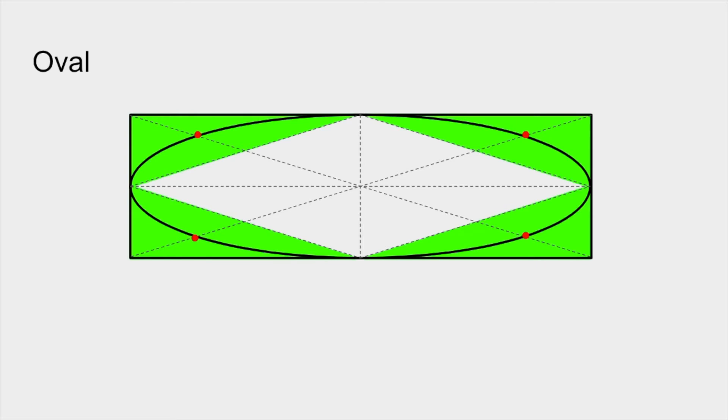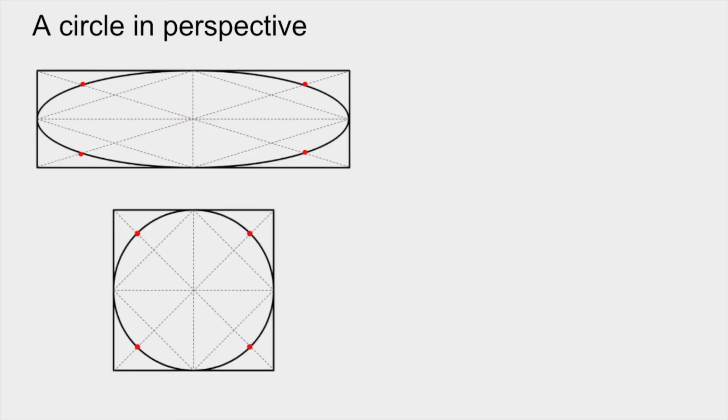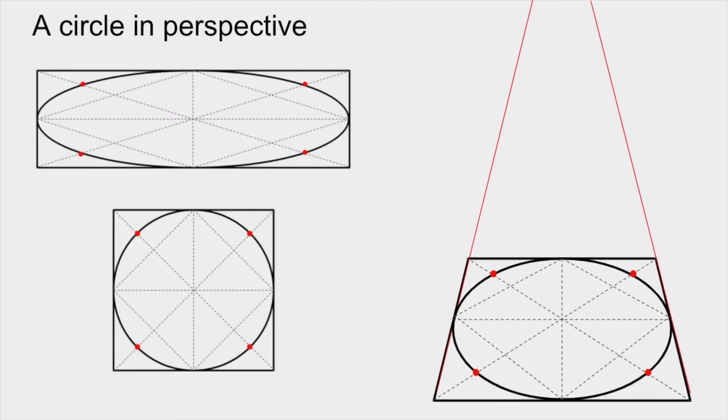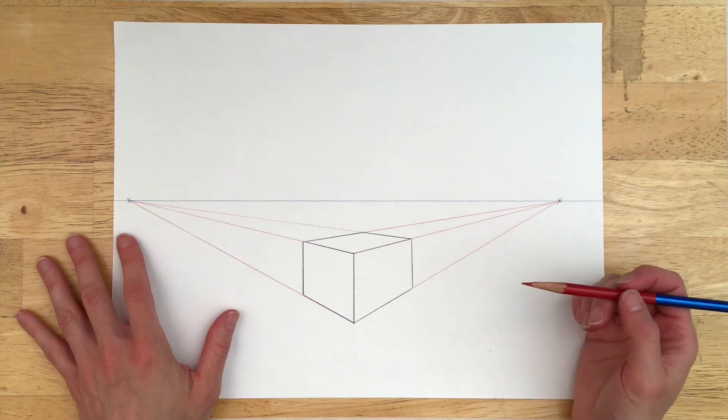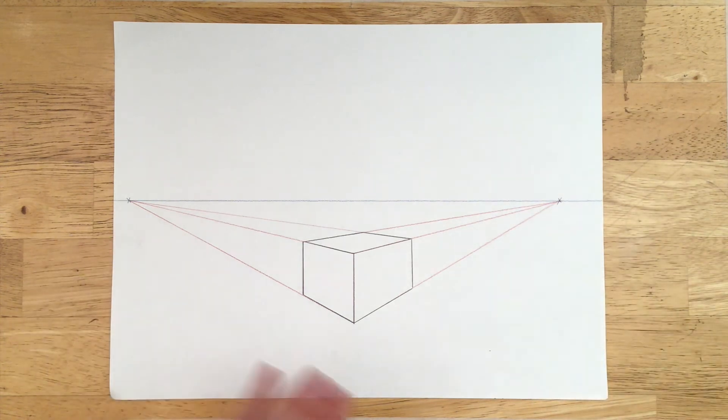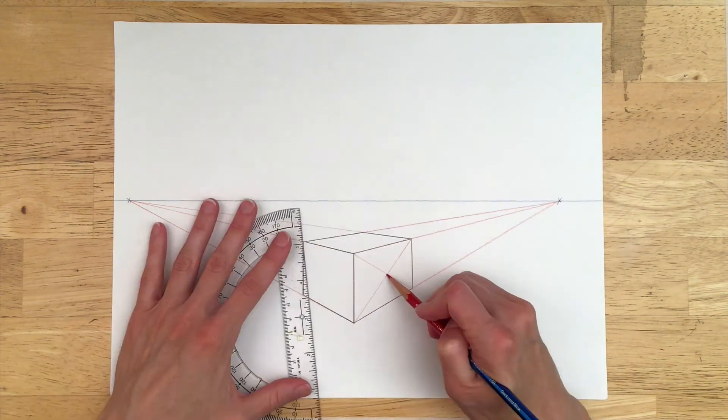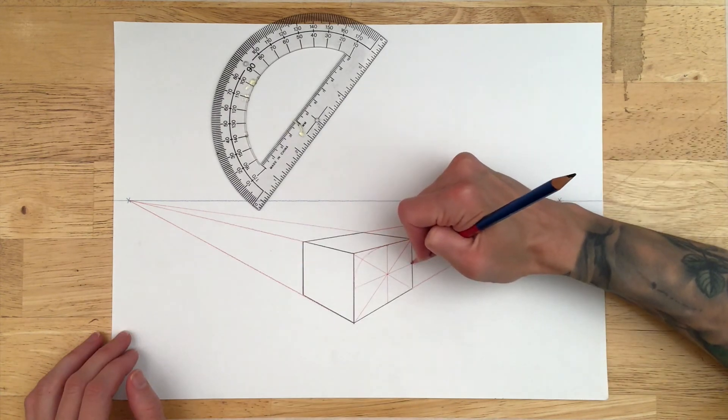So guess what? This also means that the process is the same for drawing a circle in perspective. Take a look. Here I have a box in two point perspective. From here, I follow the process locating center. Then I connect the points of tangent.